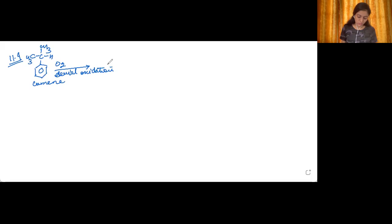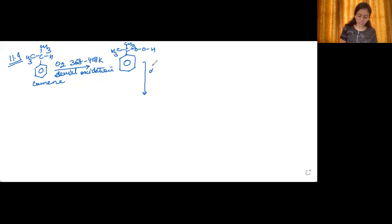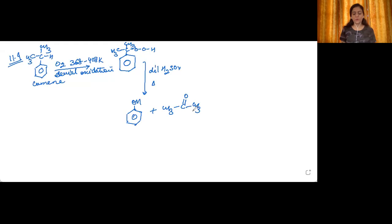The aerial oxidation temperature is approximately 368 to 408 Kelvin. It leads to an oxidation product in which the oxygen molecule gets inserted between the carbon and hydrogen atom — the three groups remain as they are. After this, we treat it with dilute sulfuric acid and heat it. The products formed are phenol and acetone — a very important reaction.